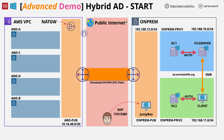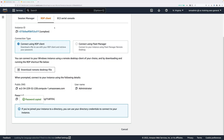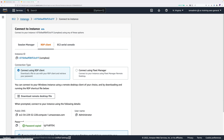Now you're connected to the on-premises jump box. Looking at the architecture diagram, the on-premises network consists of two domain controllers — DC1 and DC2 — a file server, and a fourth server called Client. The Client server is where you'll be doing most of the on-premises work from; it's designed to simulate an on-premises virtual desktop. So we need to connect into the client server, and to do that we need to go back to the AWS console and get its internal IP address.